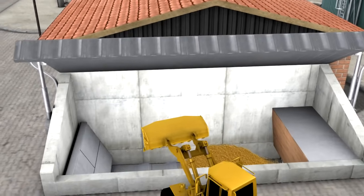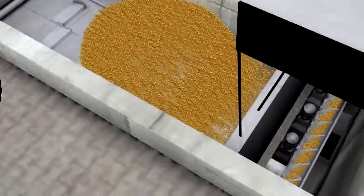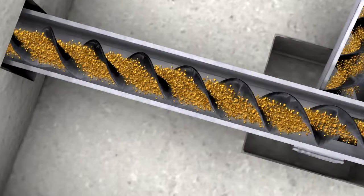The bunker is equipped with a walking floor, which transports the maize silage. Screw conveyors advance the input materials to the mixing container.